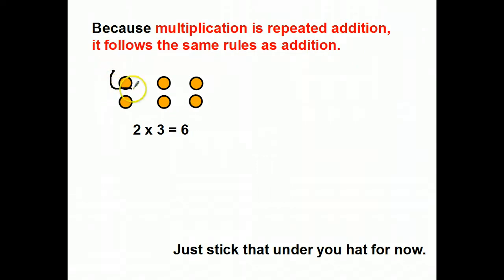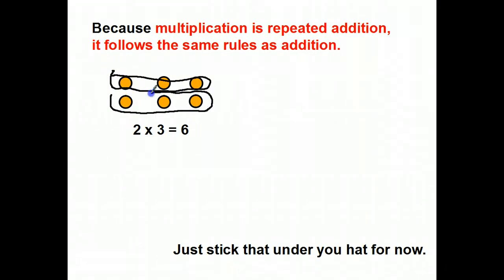But check this out, what if I grouped them differently? What if I did this? What if I said, oh wait a minute, I have groups of 3, and 2 of those groups? Did I add or subtract anything? No. I still got 6. So when I add and when I multiply, it doesn't really matter in which order, because I haven't changed the total. I haven't taken anything away, and I haven't added anything too. That's got a name, and we'll talk about that later this week. Just stick that under your hat for now.